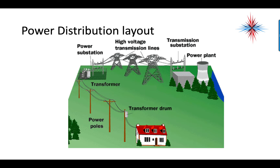This is just an example of the power transmission layout. You have a power plant in the top right, and a transmission station that increases the voltage for the high-voltage transmission lines. You then come to a power substation where it steps down to a safer level to transmit along the roads, and then you have a transformer right before the house or commercial building.